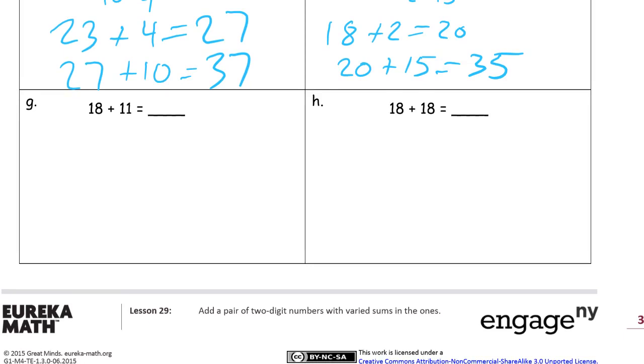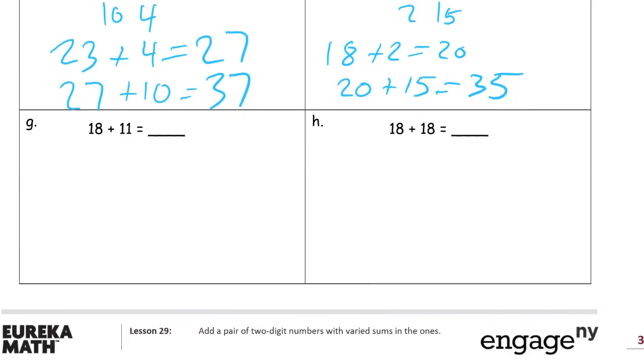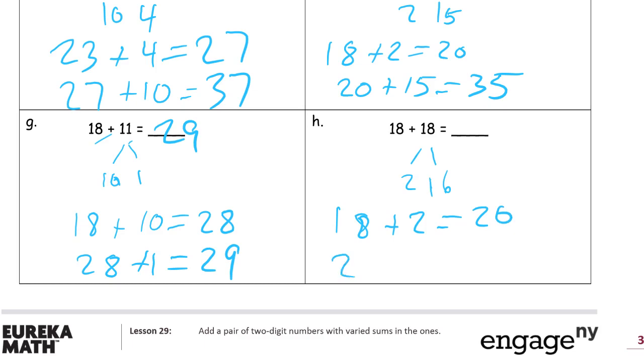18 plus 11. We could use the same strategy, right? Because 18 just needs 2 more to be 20. But we also have some pretty easy ones to work with at 8 plus 1. So, 10 and 1. 2 less than 18 is 16. 18 plus 2, 20. And now 20 plus 16. We're adding 2 tens to the 16, because 20 is 2 tens. That makes it 30 and 6. 36.